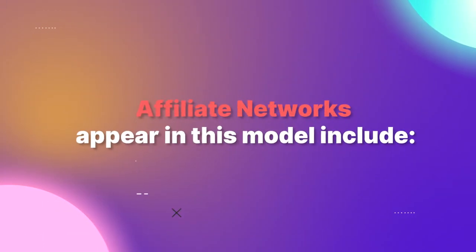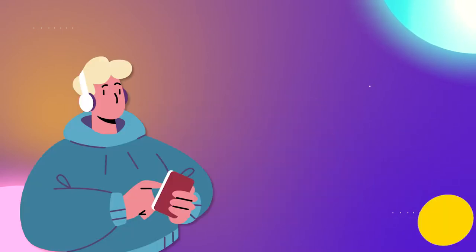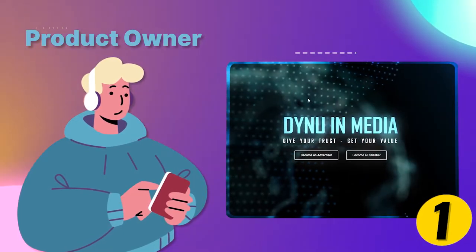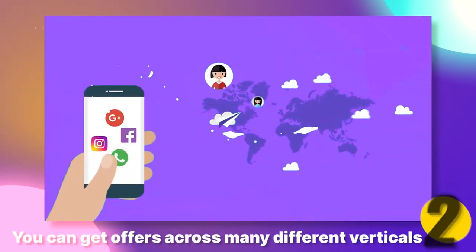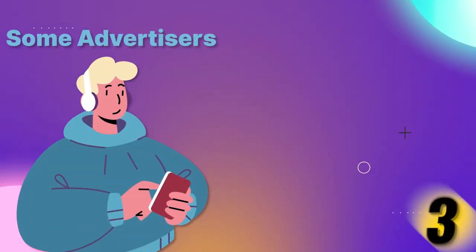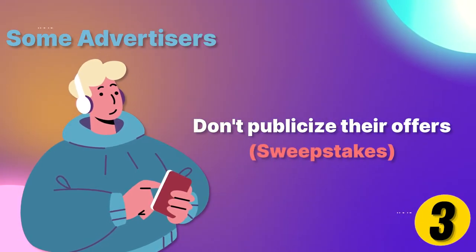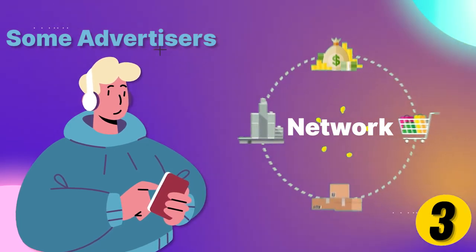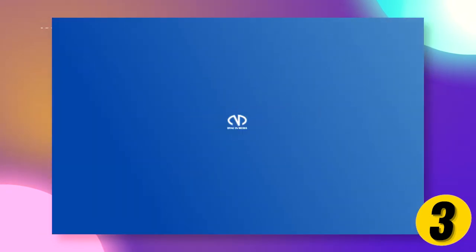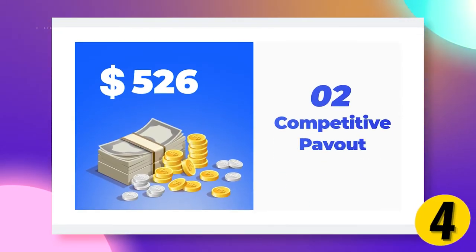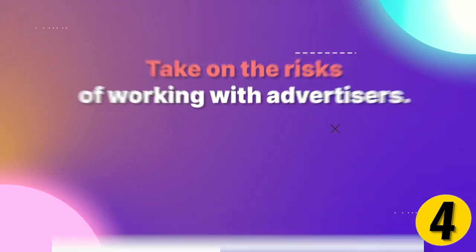But what about networks? Simply think of them as a middleman between product owners and affiliates — they are like marketplaces for offers. Not every product owner has the technology to allow marketers to create links, so you have to go through networks. When you work with them, you can get access to hundreds or thousands of offers across many different verticals. Some advertisers don't publicize their offers, like sweepstakes, so if you are looking to promote those verticals, affiliate networks are an ideal partner. One network worth considering is Denoin Media, which currently delivers a lot of sweepstake offers with competitive payouts.